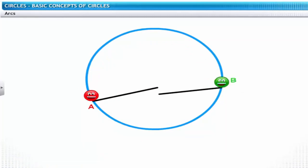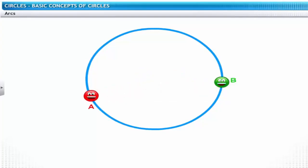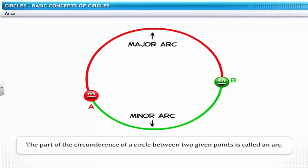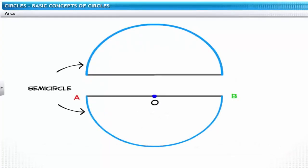Suppose there is no direct way in the form of chord AB to move from A to B — how do you travel from A to B then? You can move along the circumference of the circle. The part of the circumference of the circle between points A and B is called an arc. There are actually two ways to travel: you can either take the longer path called the major arc, or the shorter path called the minor arc. The diameter divides the circle into two equal arcs called semicircles.